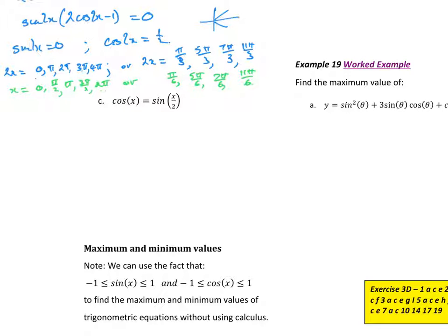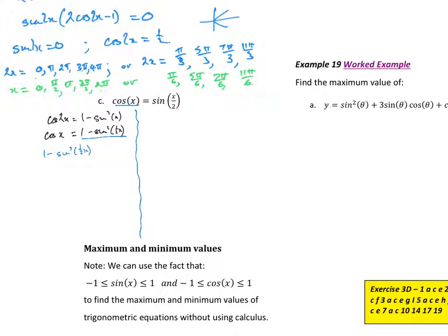To solve cos x = sin(x/2), use the double angle formula: cos2θ = 1 - 2sin²θ, so cos x = 1 - 2sin²(x/2). Substituting into the equation gives 1 - 2sin²(x/2) = sin(x/2). Rearranging: 2sin²(x/2) + sin(x/2) - 1 = 0. Let u = sin(x/2), giving 2u² + u - 1 = 0.